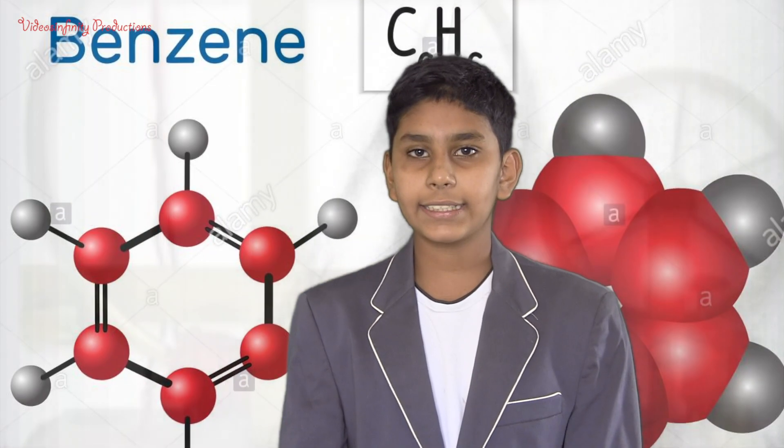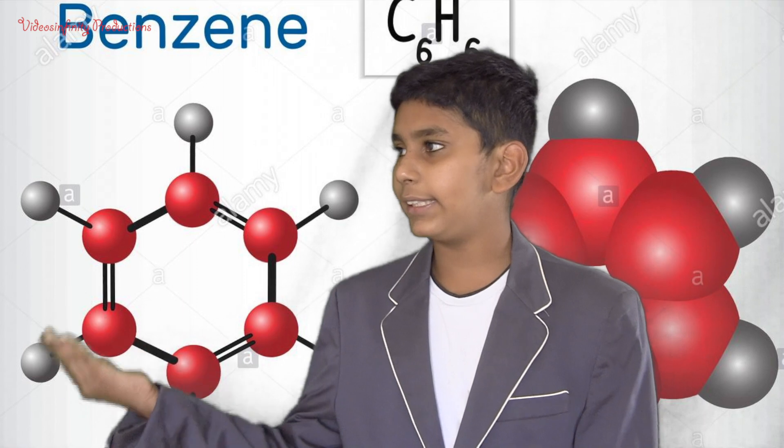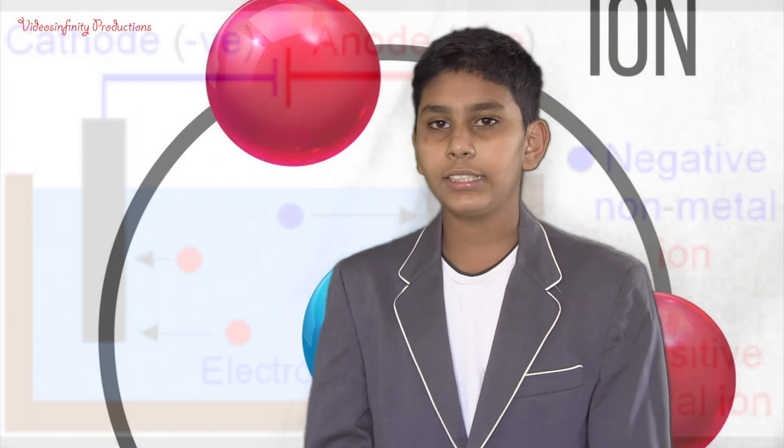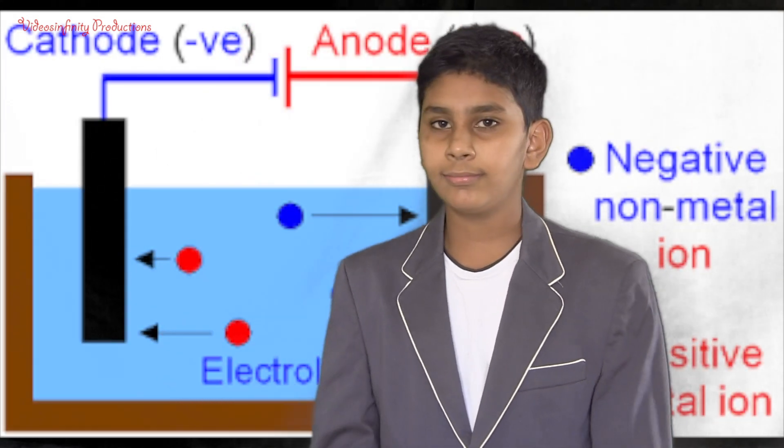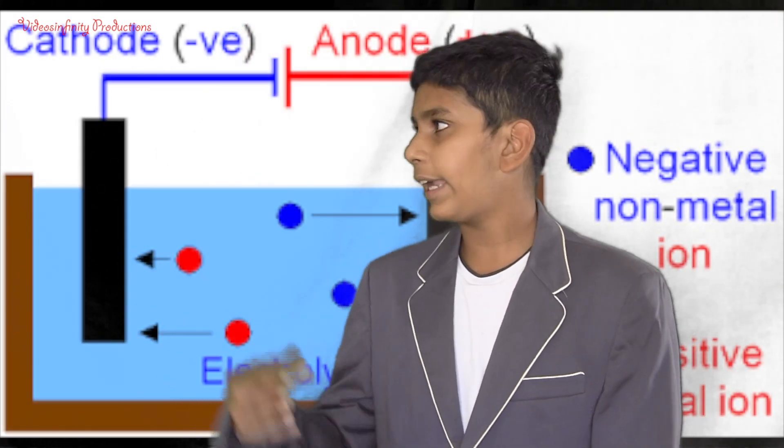As a chemist, he discovered benzene and investigated the clathrate hydrate. He also invented an early version of the Bunsen burner. He also popularized the terminology: ion, cathode, anode, and electrode.